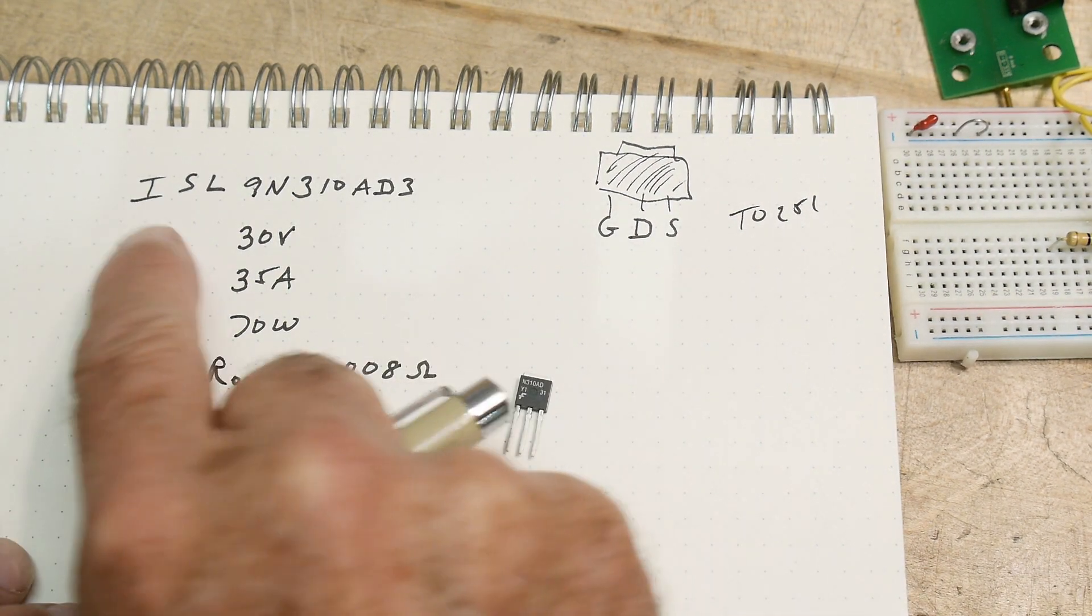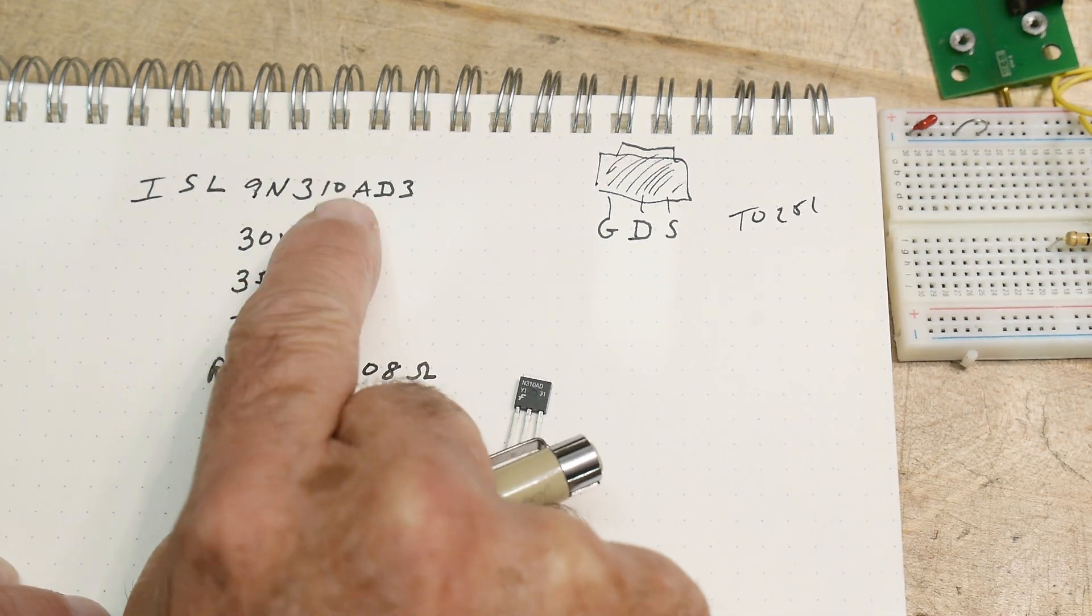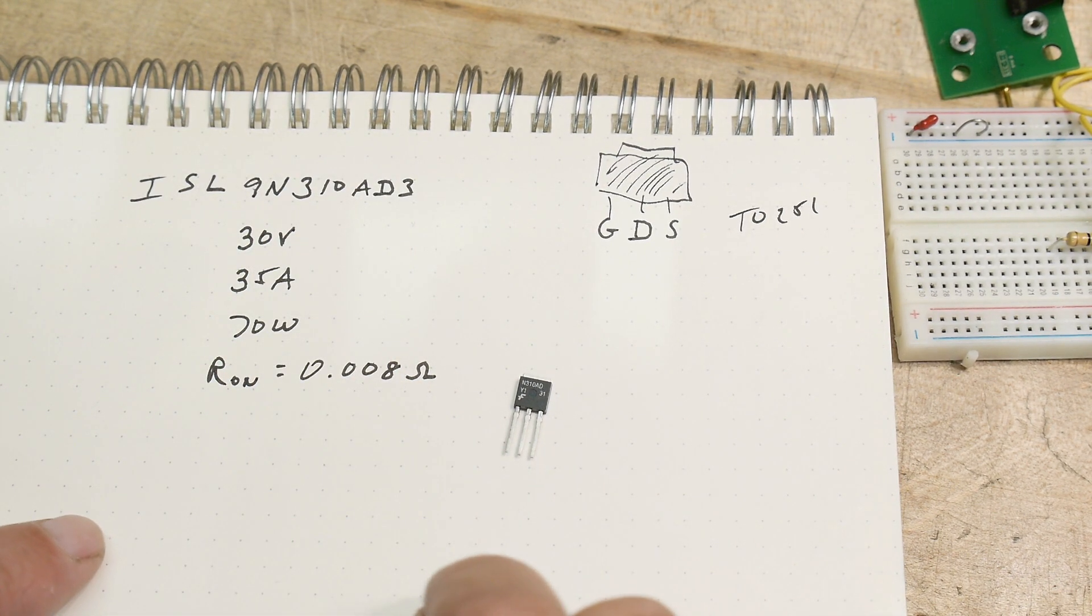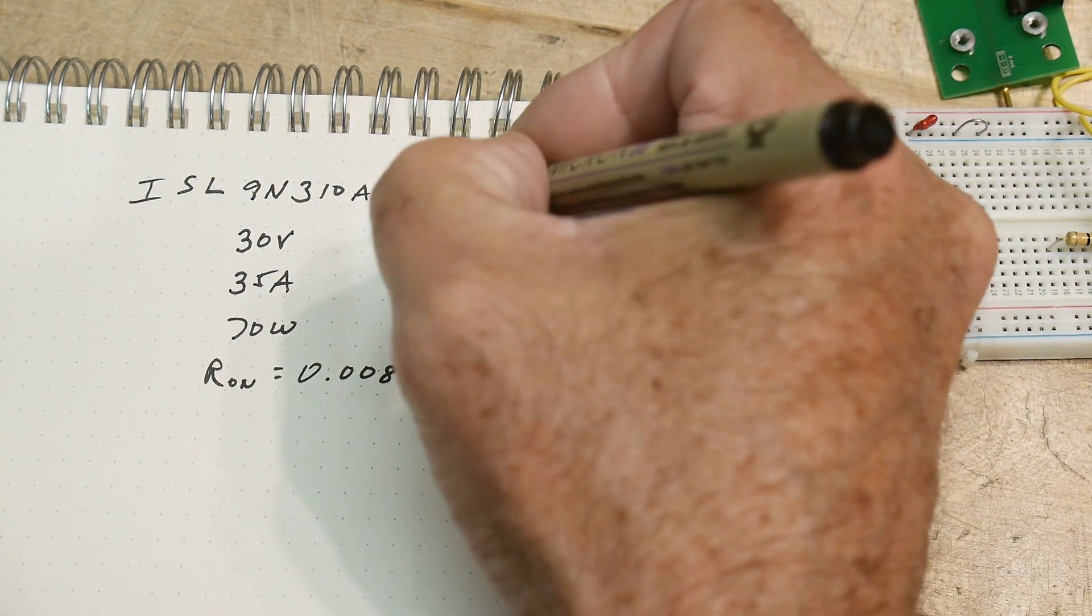All right, the chip of the day is an ISL-9N3IRAD3. Wow, what a long part number. But it's just an FET. It's just an N-channel FET.